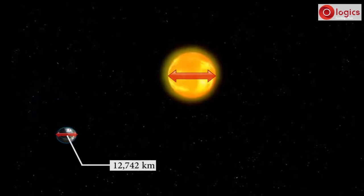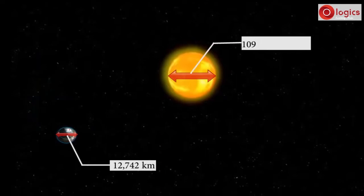Then the diameter of sun is 109 times 12,742 kilometers, that is approximately 13,90,000 kilometers.